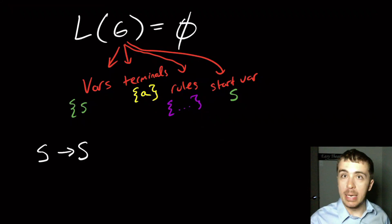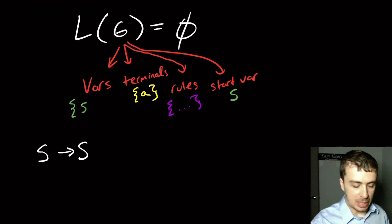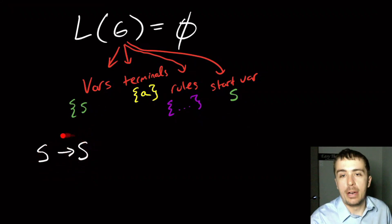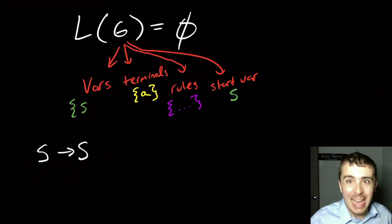So here, I claim this grammar has empty language. Well, can I generate any string of terminals? I'd have to start at the start variable. There's only one rule here, obviously. I can't get a string of just terminals on the right-hand side. I must have a variable here. And so therefore, by induction, I can't get a string of terminals from this. Because there's no terminals in the whole grammar rules anyway, but even if there were, then this wouldn't help us very much.